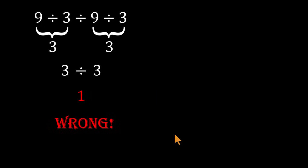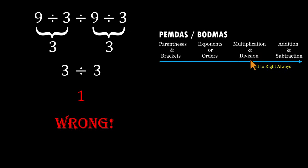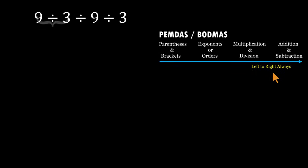Here's why. There are no parentheses in this expression, which means we don't get to group numbers however we like. Under PEMDAS or BODMAS, when division appears repeatedly, there's only one rule that matters: go strictly left to right. So let's do it properly.